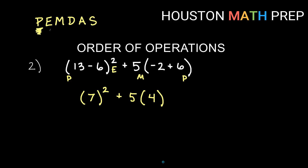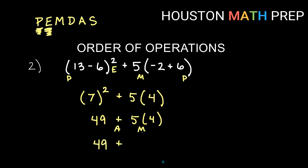So we have seven squared plus five times four. Parentheses are done, so we move to exponents. Seven squared is seven times seven, which is 49. Now I do any multiply or divide — I have an add and a multiply left, so I do the multiply next. Five times four gives 20, so we have 49 plus 20. The add is the only thing left, and 49 plus 20 gives us 69.